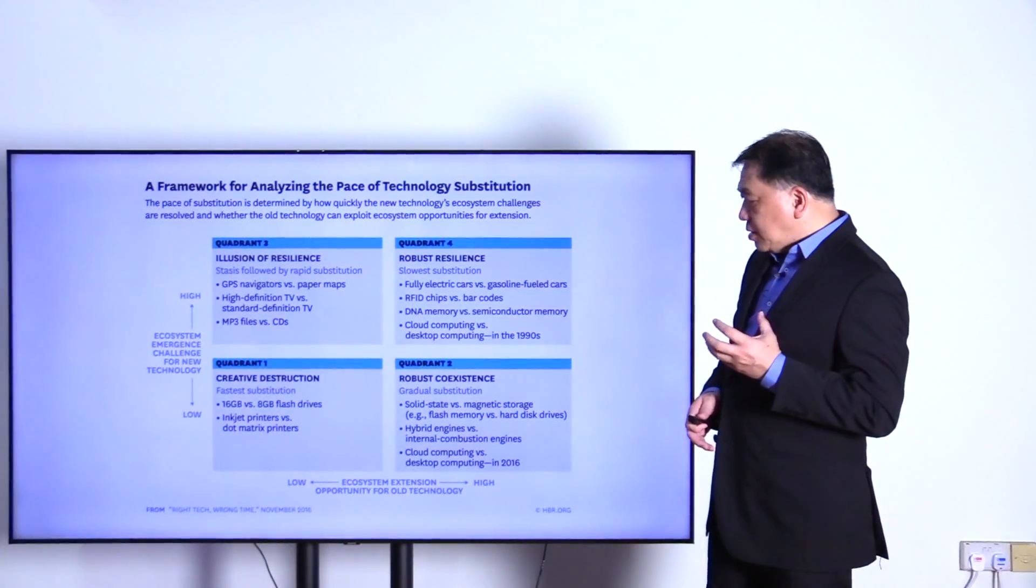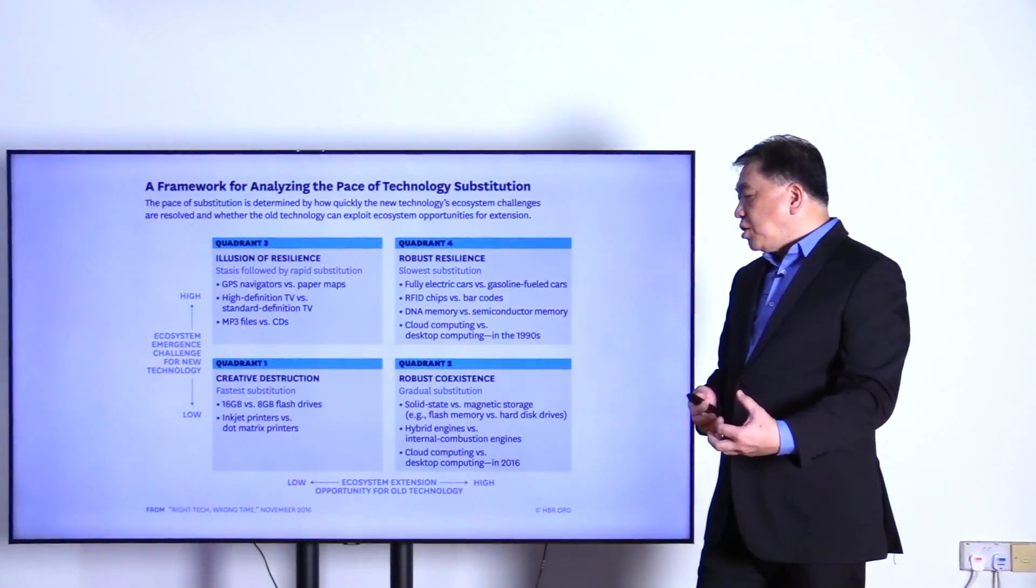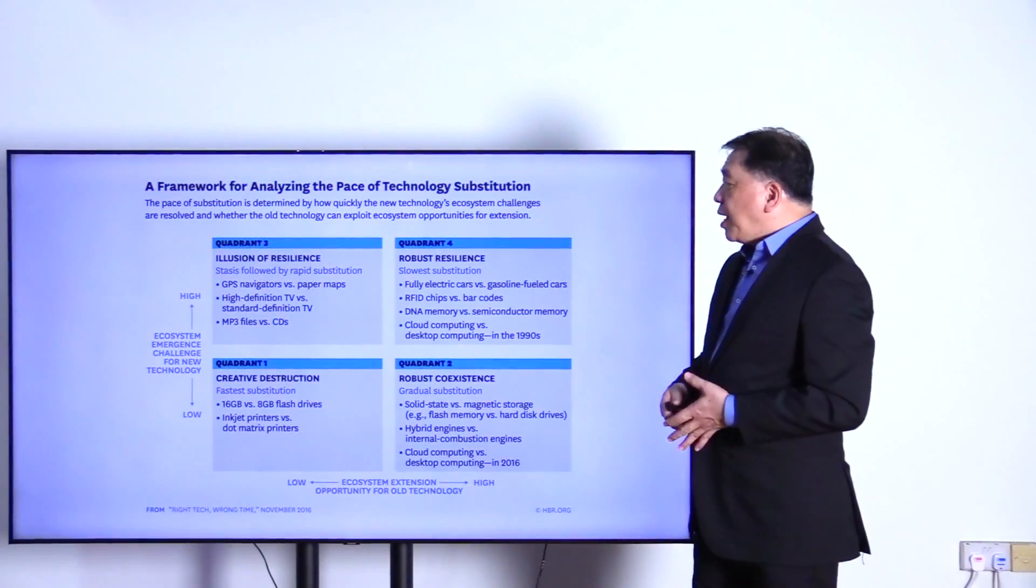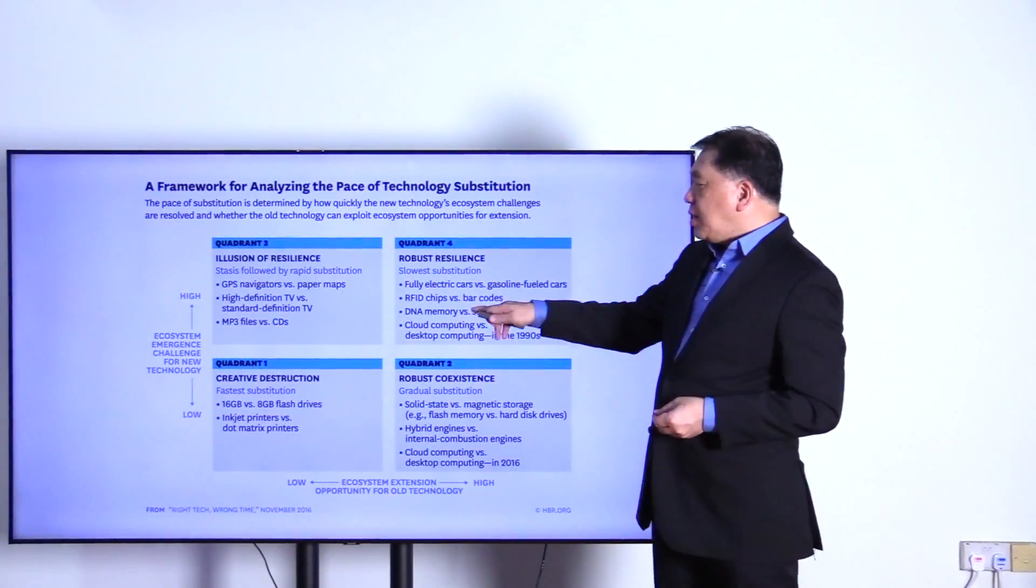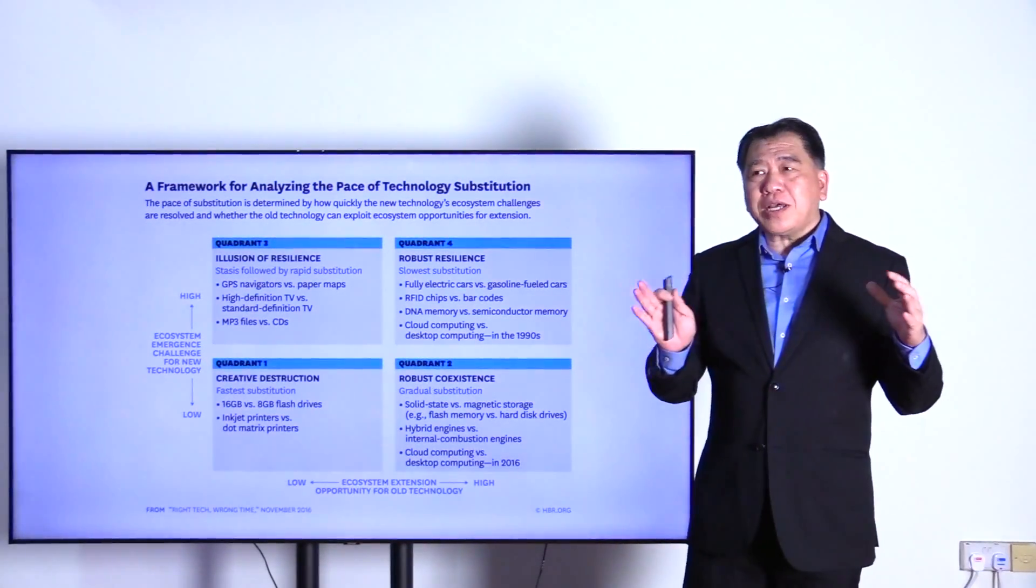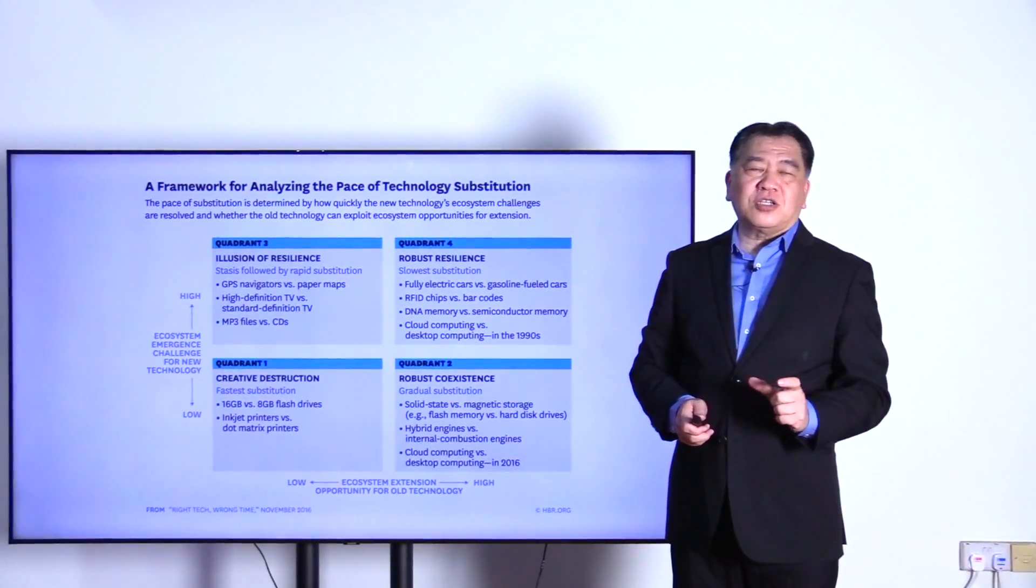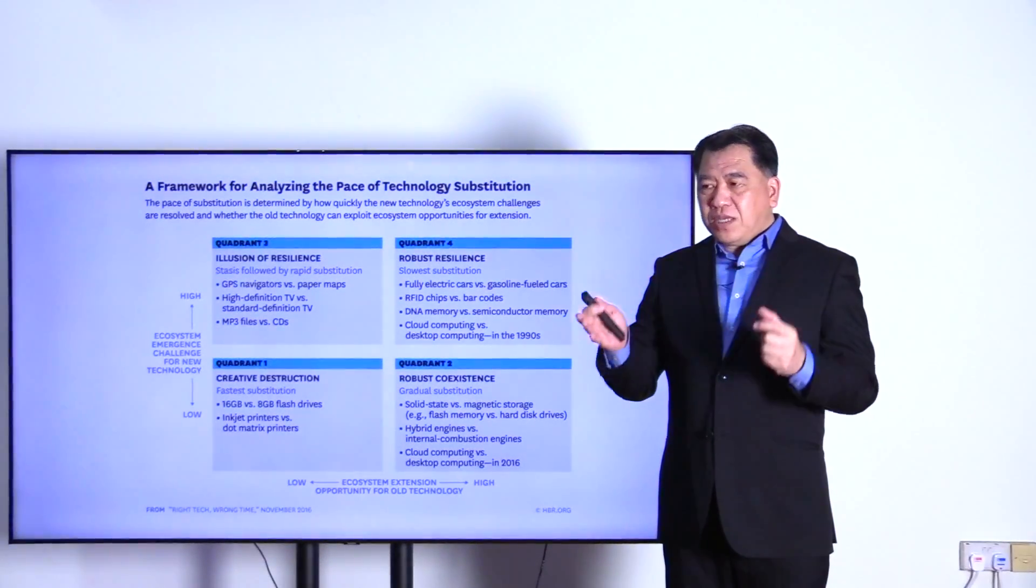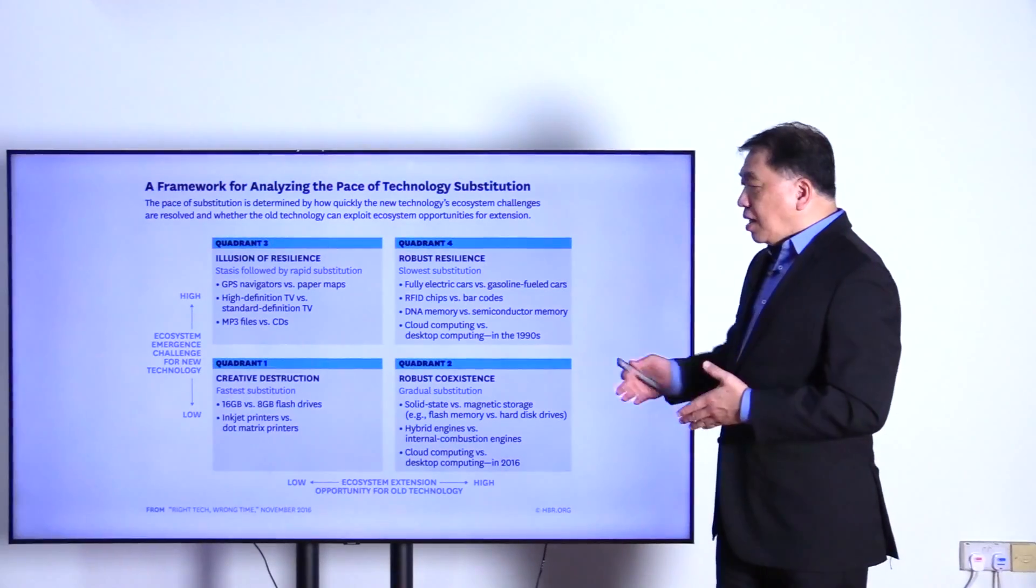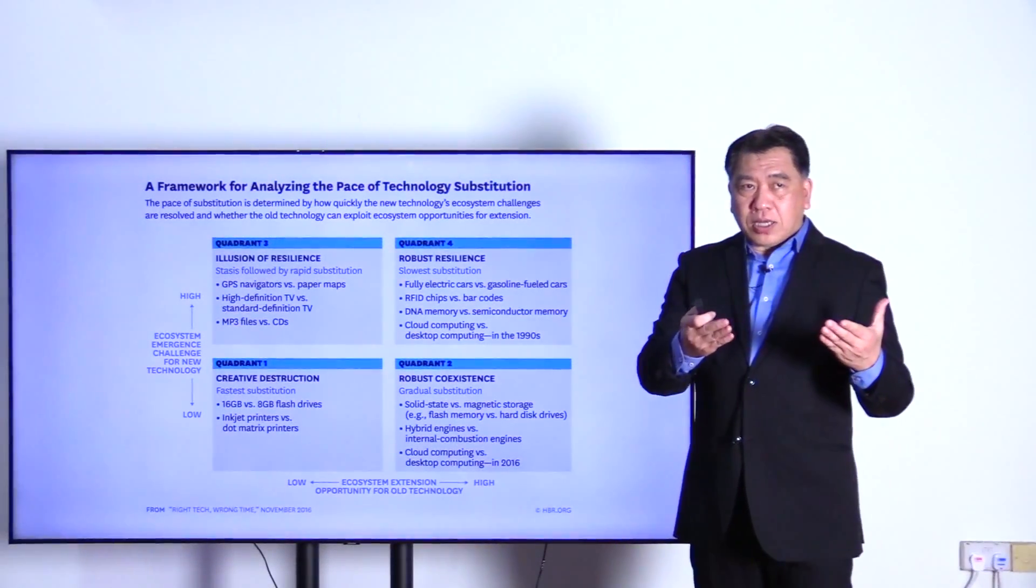Quadrant two is robust coexistence, and we can see that in hybrid engine versus internal combustion engine. It combines the combustion engines into hybrid engines, and it's not full replacement, but you just drag along and have robust resilience. For robust resilience, you can see that for example the EVs versus gasoline. We all know that EV will eventually replace the gasoline car. However, the gasoline car infrastructure will take a long time before the EV recharging infrastructure will come into picture and before it's being replaced. That can take 20 to 30 years.